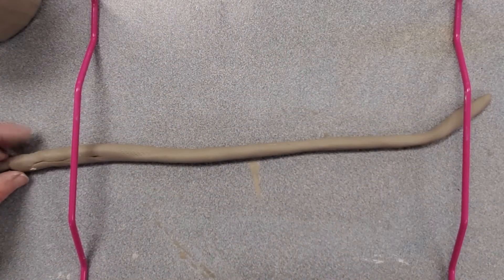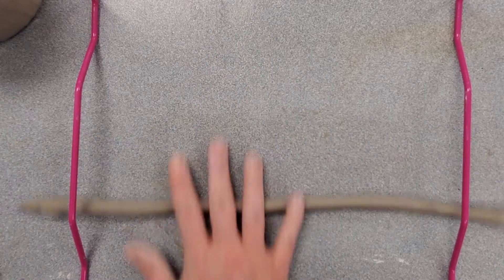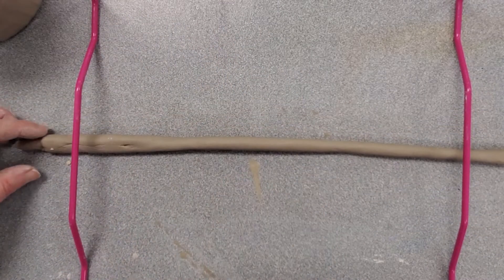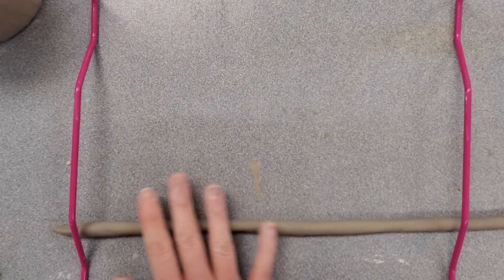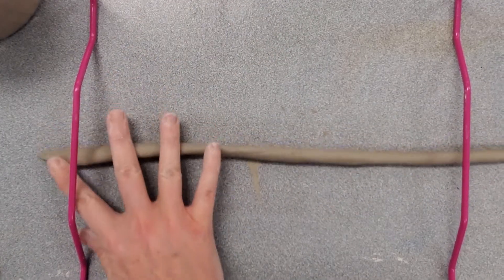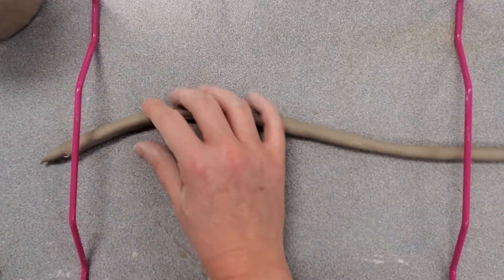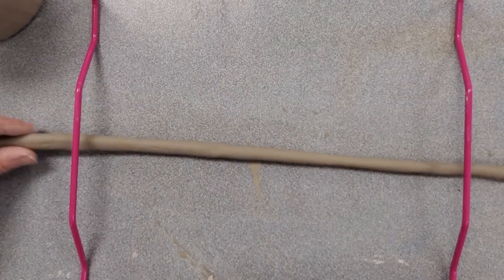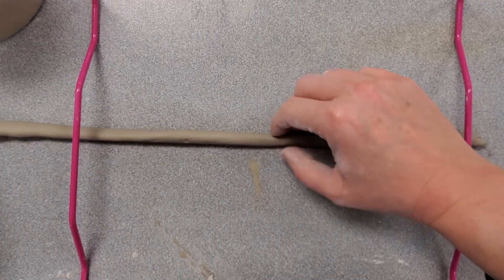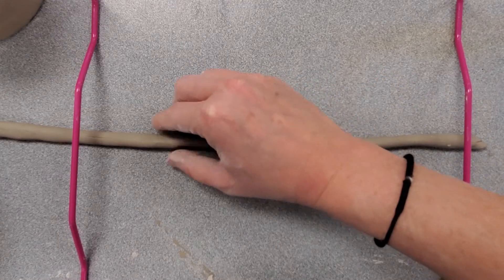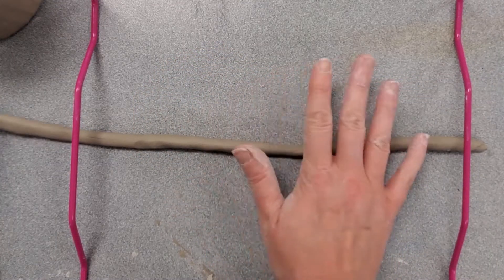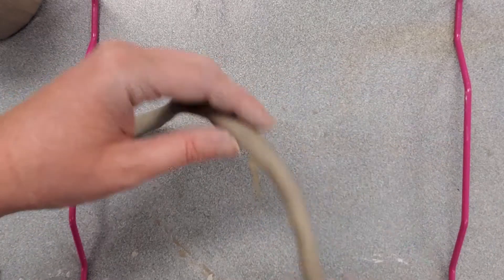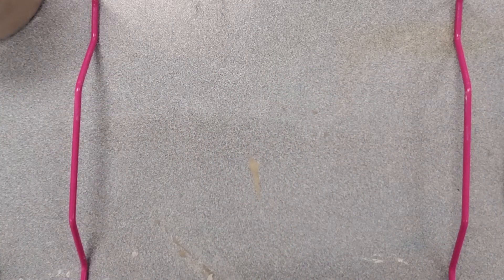Just a reminder: the more you handle your clay, the more it's going to dry out and crack and break. We want to handle it and form things with it, but we don't want to over-handle it. This is my one coil. This is a little bit thinner, I believe, than my width of a pencil, so this is perfect to help me attach stuff. I'm going to set this aside.